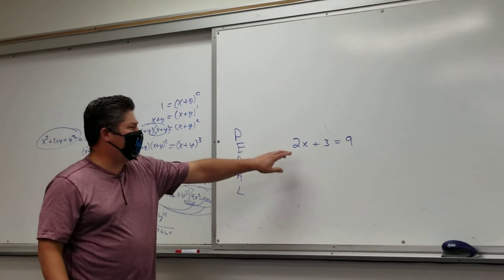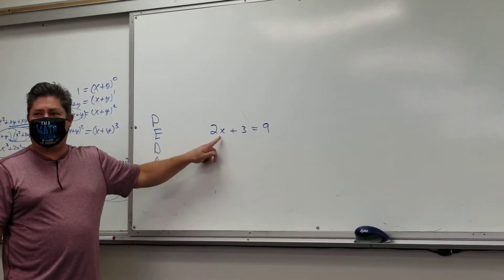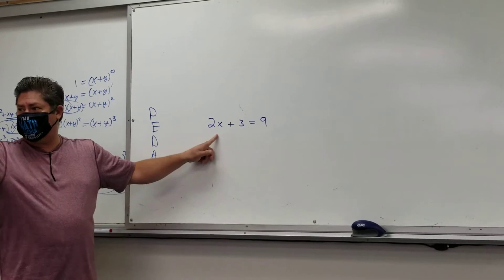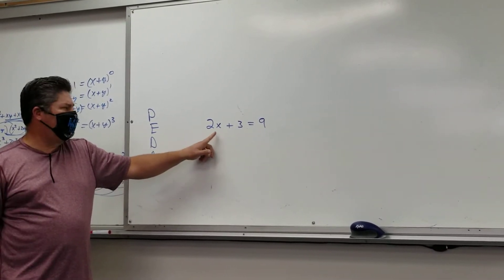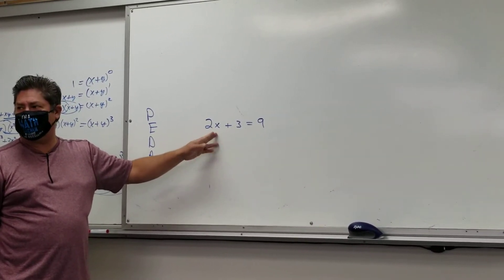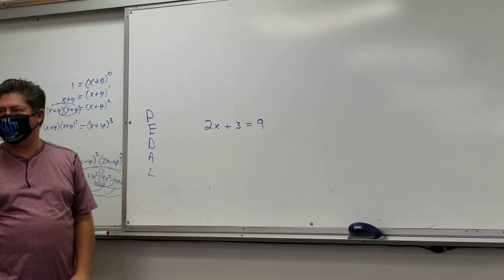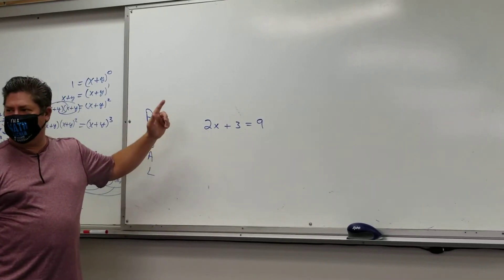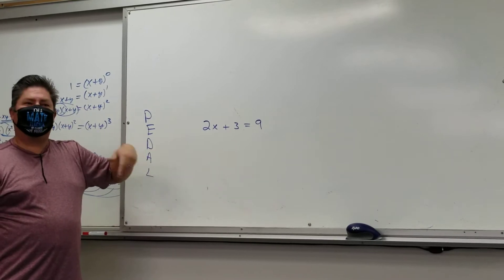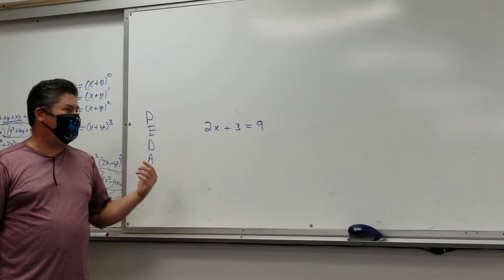So my goal is to get this variable, this X, all by itself on this side of the equation. Logan, what do I need to get rid of to get that X by itself? The three. Got to get rid of the three and the two. So the next question is, which one do we get rid of first?